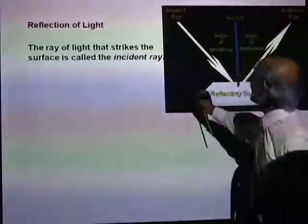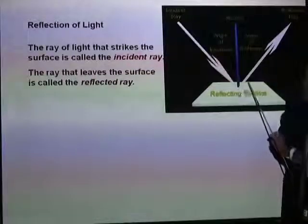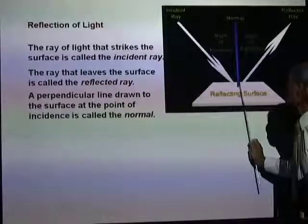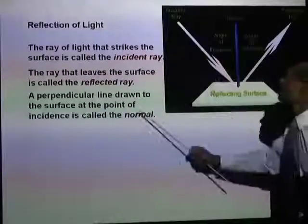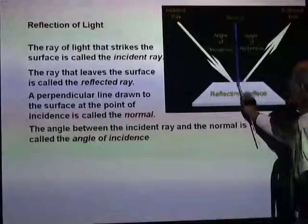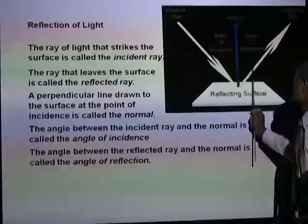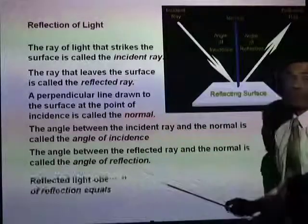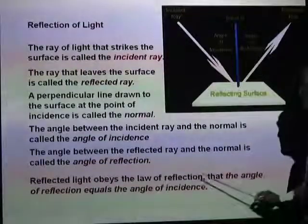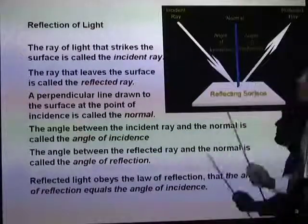The ray of light that strikes the reflecting surface is the incident ray, and the ray that leaves that surface is the reflected ray. If you draw a perpendicular to the surface at the point of incidence, we call that the normal. The angle between the incident ray and the normal is the angle of incidence, and the angle between the normal and the reflected ray is the angle of reflection. Reflected light obeys the laws of reflection, and the most important law is that the angle of incidence equals the angle of reflection.